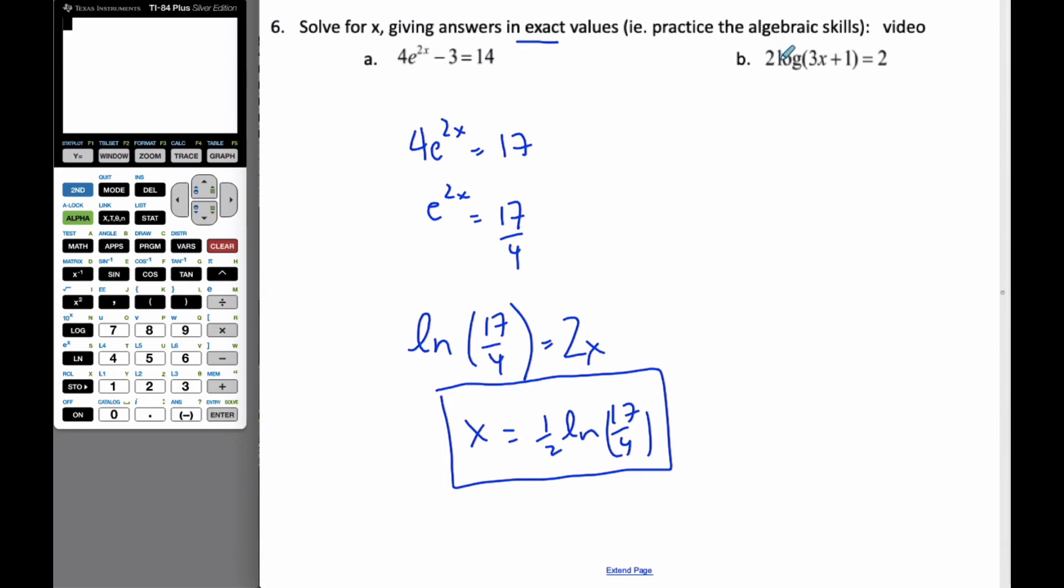If we do the other one, in order to do a logarithm I need to log them by itself. And so here I'm going to divide both sides by 2. So it's log 3x plus 1 is equal to 1.